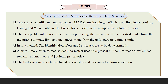The next method is TOPSIS — Technique for Order Preference by Similarity to the Ideal Solution. TOPSIS is an efficient and advanced MADM method, first introduced by Yun and Hwang, to obtain the finest choice based on the compromise solution principle. In this method, identification of essential attributes is done primarily, and the decision matrix represents all the information containing the alternatives and criteria — alternatives like refrigerants and attributes like properties of the refrigerants.